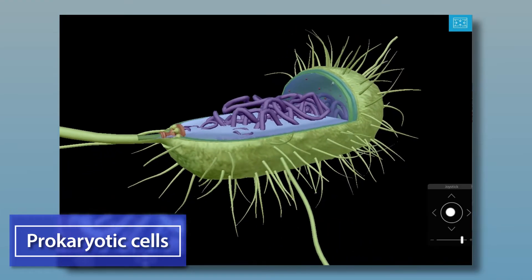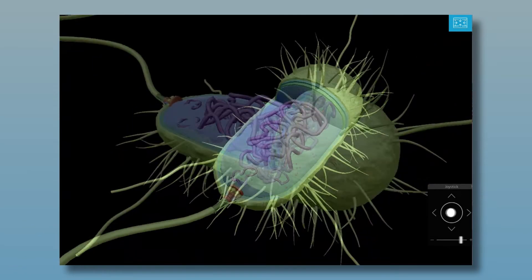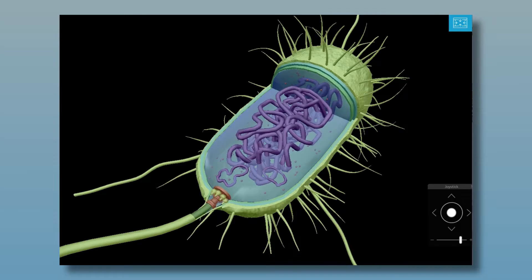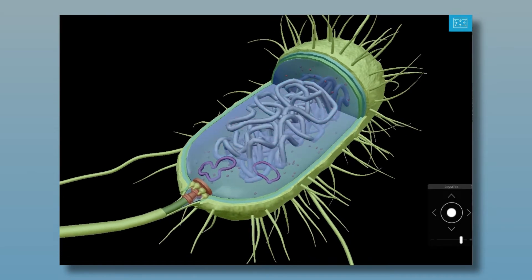Bacteria are a good example of prokaryotes, organisms consisting of a single prokaryotic cell. Prokaryotic cells are small, generally between 0.1 and 5 micrometers in diameter, and they don't have a nucleus.